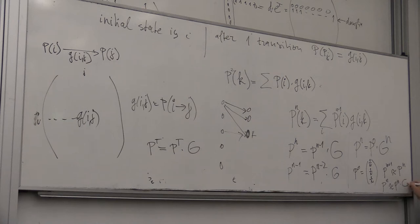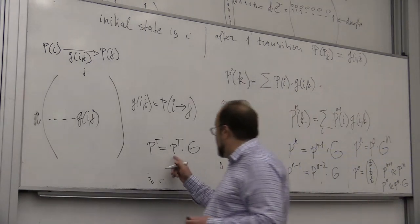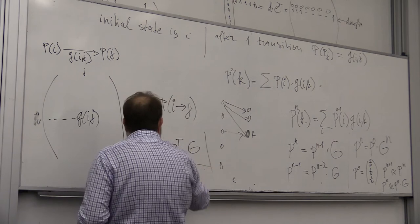is just P N times G, so this would say we are in fact then looking for the vector P that satisfies, that is a fixed point of this matrix.